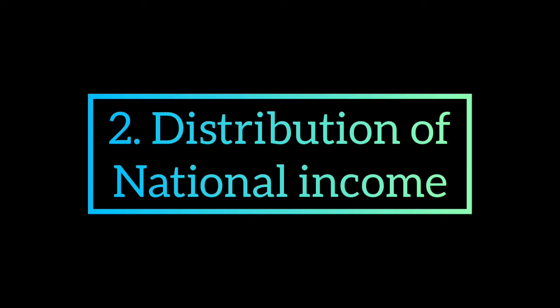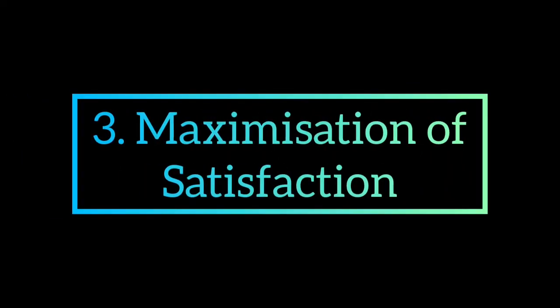Number two: distribution of national income. Money not only helps in measuring the national income but also helps in its distribution among all people. The total output of an economy is produced by a large number of people in the form of laborers, land, capitalists, and entrepreneurs. Money helps in distributing national income in the form of rewards through rent, wages, interest, and profit, all expressed in terms of money.